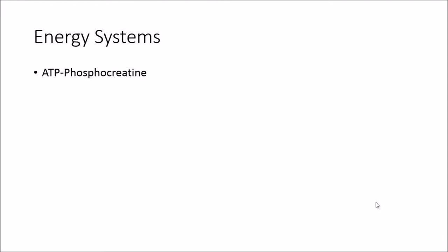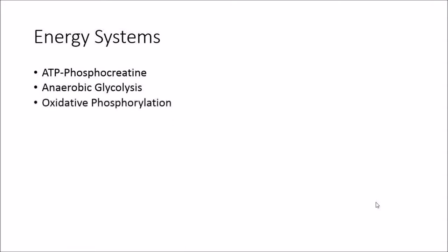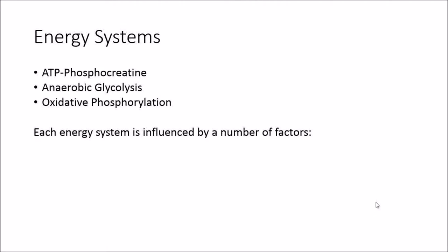We have three primary energy systems. First is the ATP-phosphocreatine system. Second is anaerobic glycolysis — both are anaerobic and do not require oxygen. Third is oxidative phosphorylation, our aerobic metabolism, which requires oxygen. Each energy system is influenced by the FIT principle — frequency, intensity, time, and type — which determines what energy system we'll be training in.